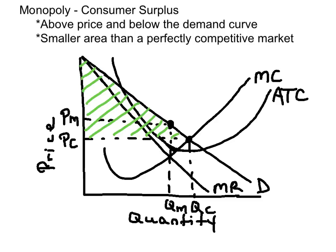When the price falls, consumer surplus will increase. So in this case, if this was a perfectly competitive market, they would produce where demand is equal to marginal cost, at QC and PC. Because of the lower market price, the consumer surplus area will be greater.